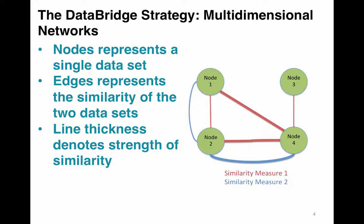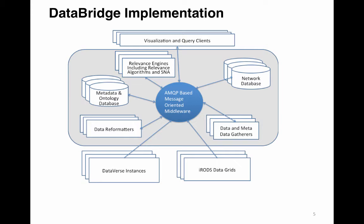Groups that use the same datasets form a community with common interests. Different similarity measurements can be applied to the network, resulting in the identification of multiple potential communities of interest. This approach enables the identification of communities based on common use of datasets, common use of operations, or common modes of analysis.